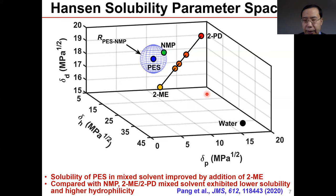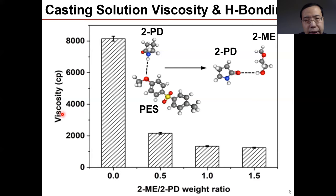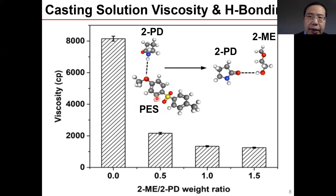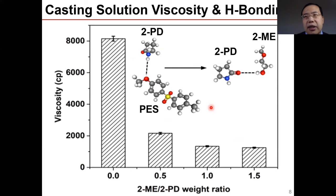Here we plot viscosity versus 2ME-to-2PD weight ratio. The hydrogen bonding between 2PD and PES forms through the ether linkage. When there is strong hydrogen bonding, viscosity is very high. However, as we add 2ME, the hydrogen bonding between 2PD and PES is competitively replaced by a more favorable hydrogen bonding between 2PD and 2ME, so the viscosity drops significantly. Lower viscosity is easier for phase separation.